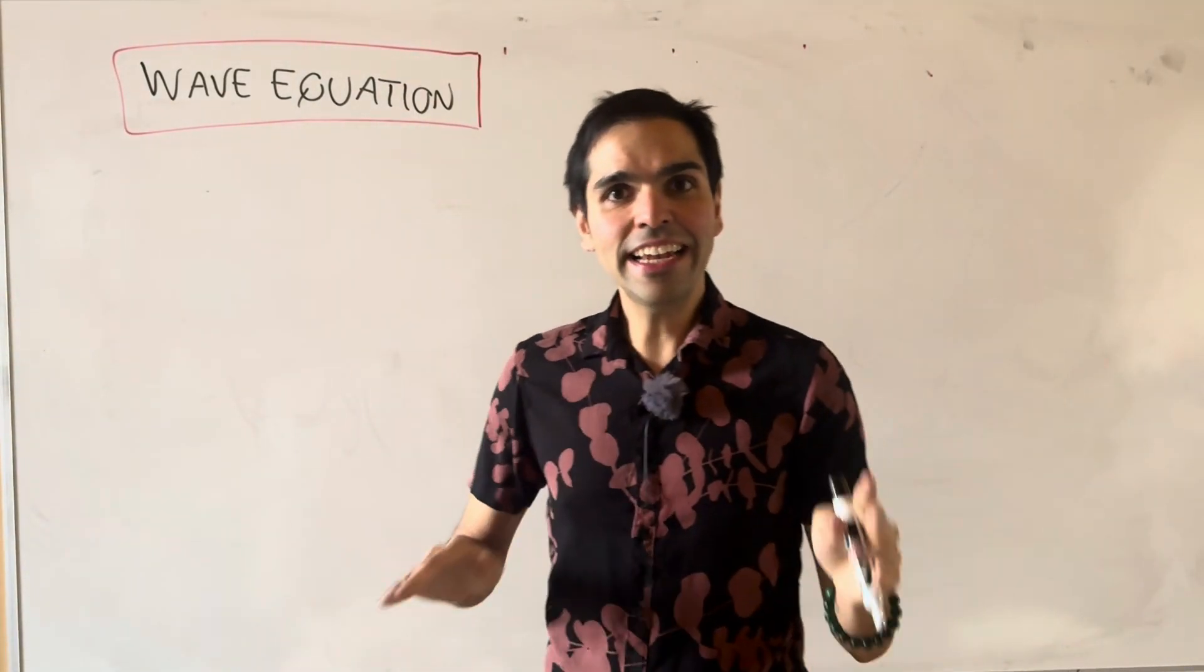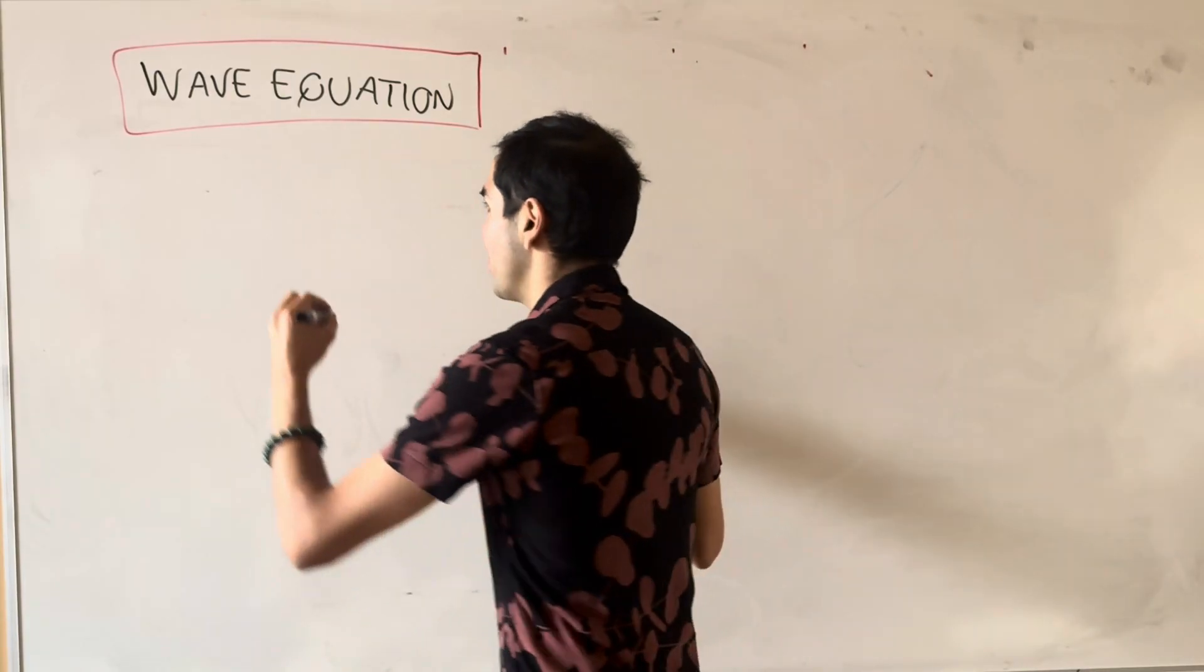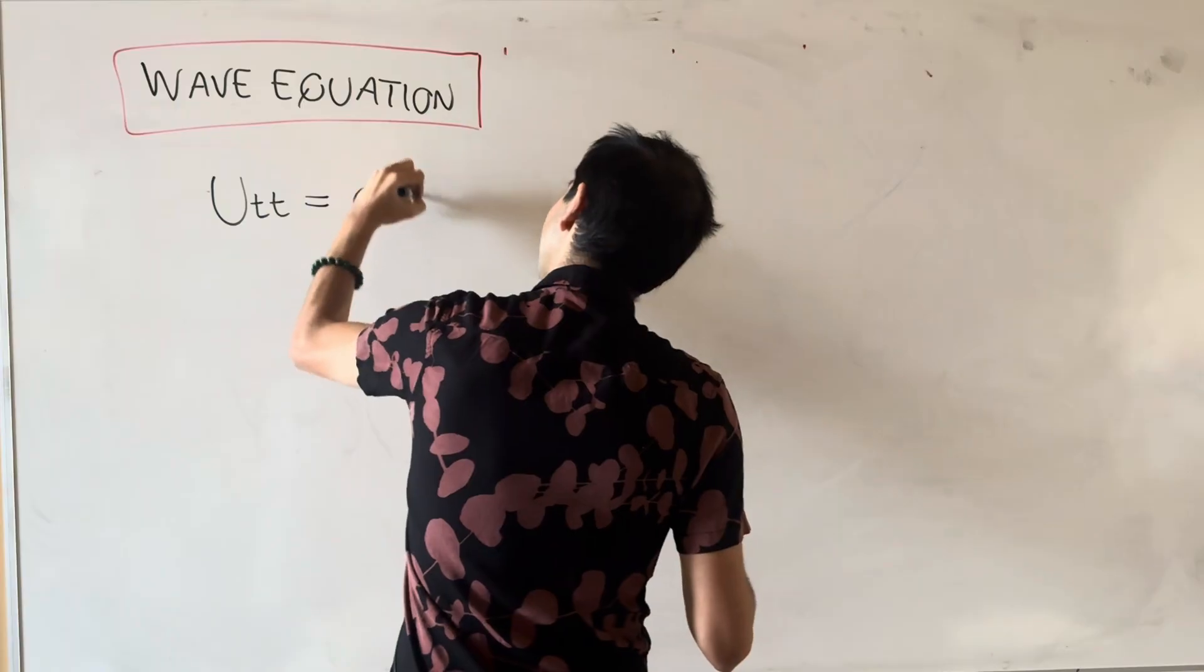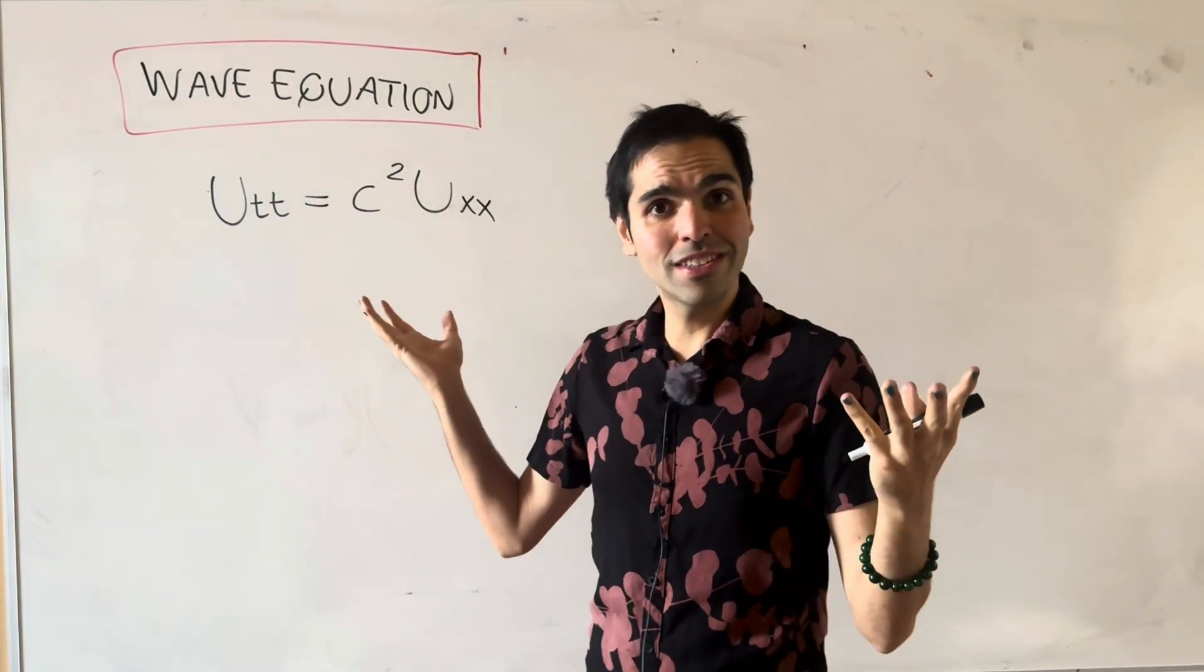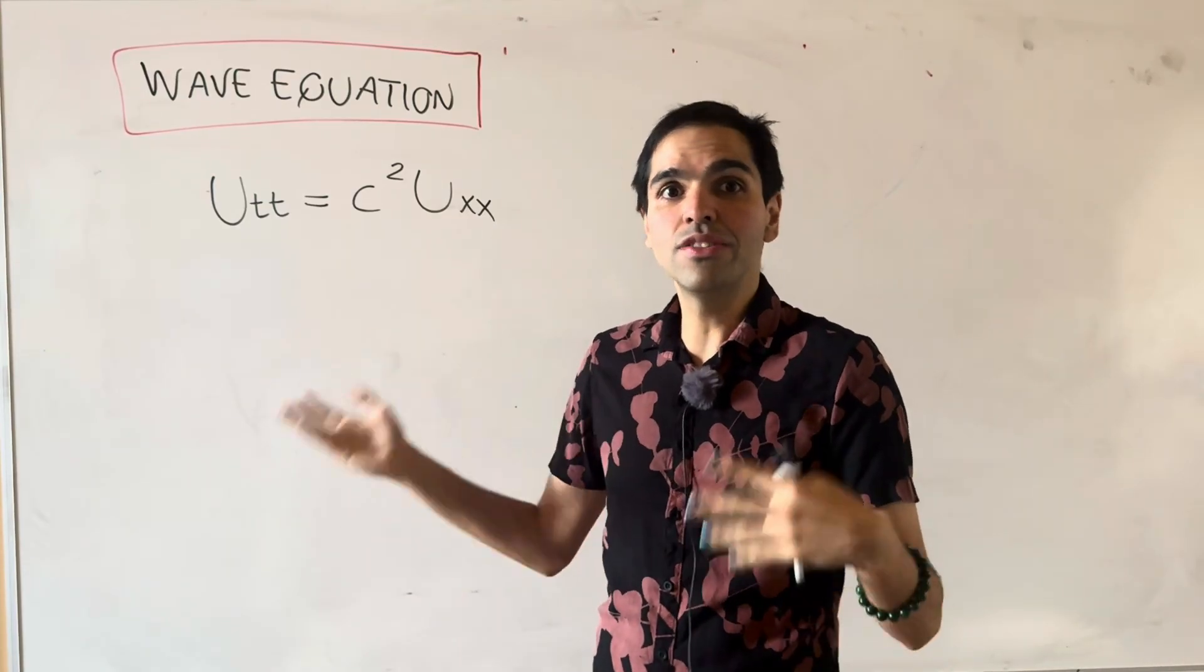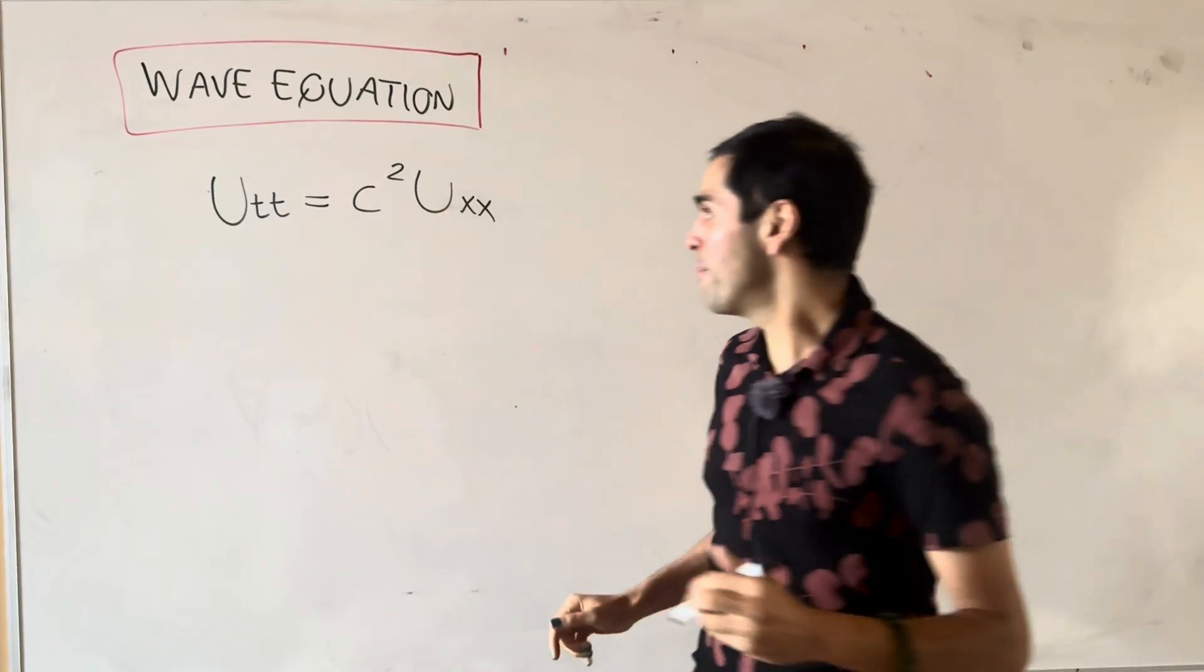All right, thanks for watching. And now let's use the coordinate method to solve the wave equation U_tt equals c squared U_xx. And the advantage you'll see is that it is more elegant, but the disadvantage is you need to know what coordinates to choose. That's it. Let's apply this.